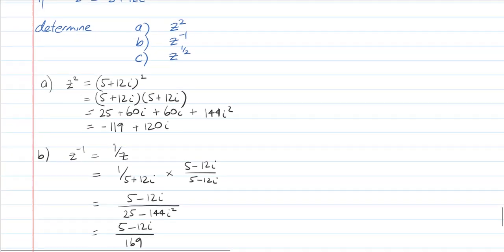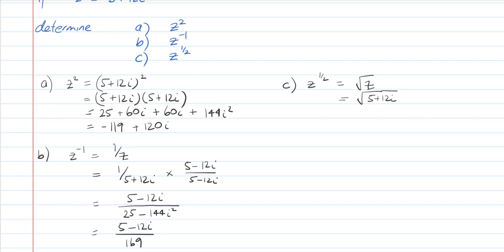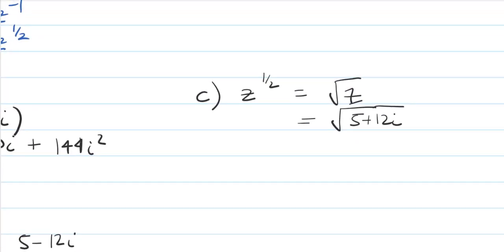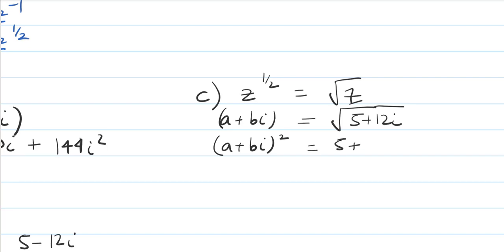Now for part c: calculate z to the power of a half, which equals the square root of z, and that's equal to the square root of 5 plus 12i. Square roots are a bit harder. The key concept is that the square root is going to be a complex number, so it's going to be some number in the form a plus bi. That must equal the square root of 5 plus 12i, so we square both sides to get a plus bi squared equals 5 plus 12i.